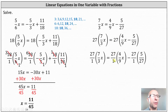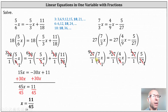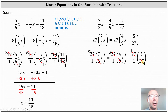Notice on the right side we now have 27 over one times 4 ninths x, minus 27 over one times 5 twenty-sevenths. Again, before multiplying, we will simplify. 27 and 3 share a common factor of 3 — there is one 3 in 3 and nine 3s in 27, or 27 divided by 3 is 9. On the right side, 27 and 9 share a common factor of 9 — there is one 9 in 9 and three 9s in 27, or 27 divided by 9 is 3. For the last product, 27 divided by 27 is 1.